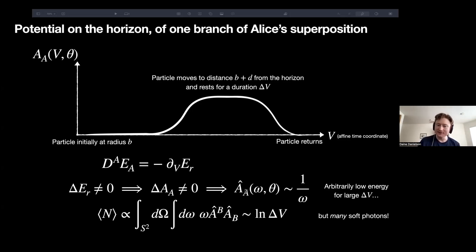So although the energy of the photons is arbitrarily small because it goes like one over omega, the energy would be dominated by one over delta V photons, arbitrarily soft photons, there will be an arbitrarily large number of these arbitrarily soft photons in the presence of a black hole.